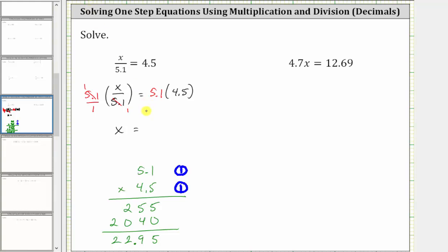Which means x equals 22.95 is the solution to the equation. This means if we substitute 22.95 for x back into the original equation, it will satisfy the equation or make the equation true.